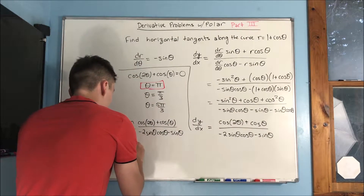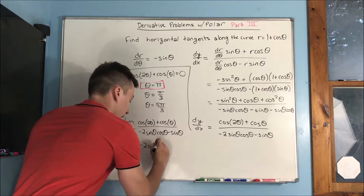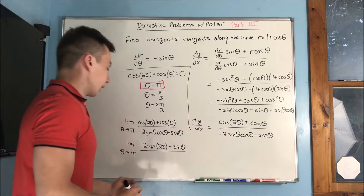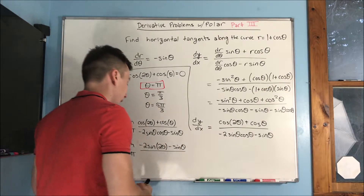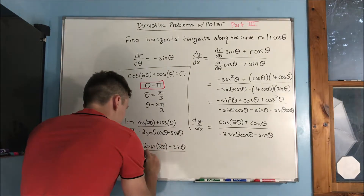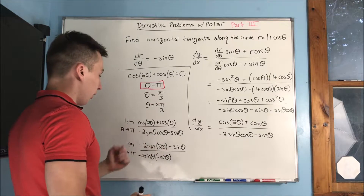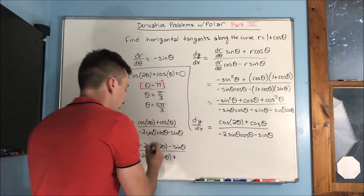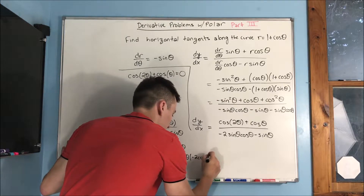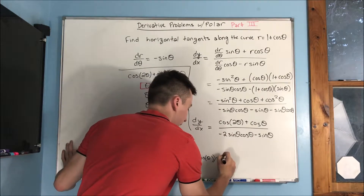Applying L'Hôpital's rule, we take the derivative of the top and bottom separately. The numerator becomes negative two sine of two theta minus sine of theta. The denominator requires product rule and gives us negative two sine theta times negative sine theta.